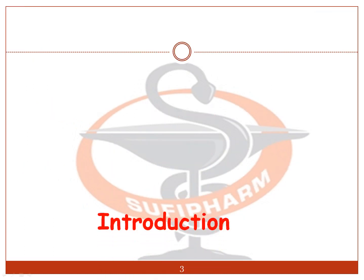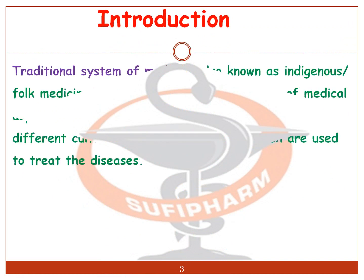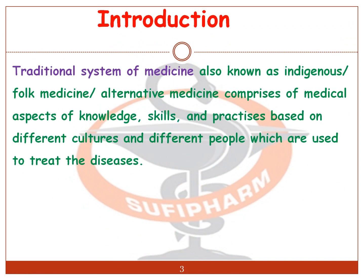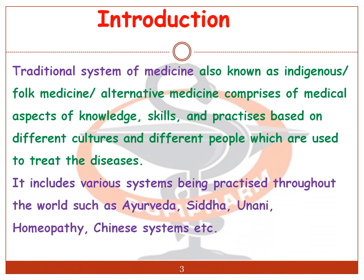The basic introduction of Indian system of medicine: the traditional system of medicine, also known as indigenous folk medicine or alternative medicine, comprises medical aspects of knowledge, skill, and practices based on different cultures and peoples, which are used to treat disease. It includes various systems practiced throughout the world such as Ayurveda, Siddha, Yunani, Homeopathy, Chinese system of medicine, etc.